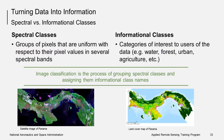It is important that you understand the difference between a spectral class and an informational class. A spectral class is a group of pixels that are spectrally similar. An informational class is a land cover class of interest. Image classification is the process of assembling groups of similar pixels into classes that are associated with informational land cover classes. Image classification has been used to transform the satellite image of Panama on the left to the land cover map on the right.